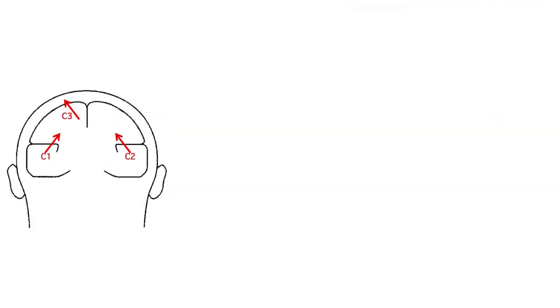For example, imagine that we have the three components labeled here as C1, C2, and C3. Each internal component is represented by an arrow showing the location and direction of the dipole for that component.